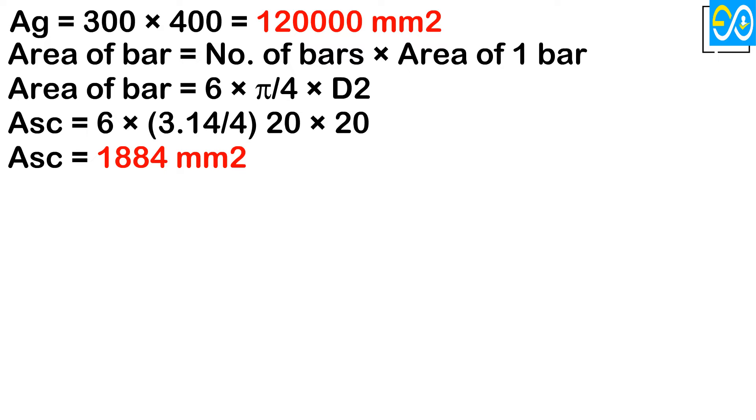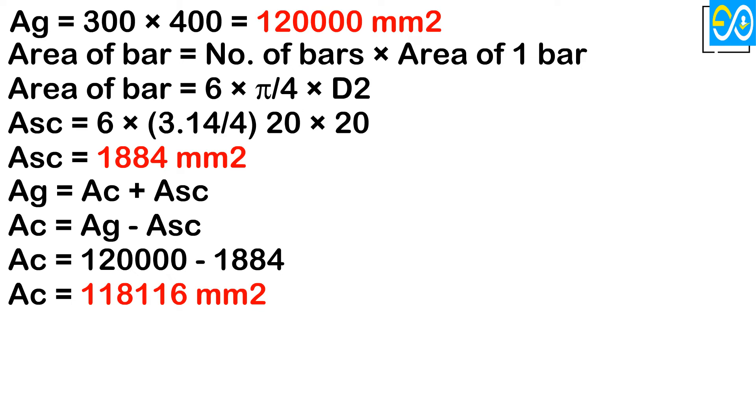Now we calculate the area of concrete in the column. We know that the gross cross-sectional area of the column equals the area of concrete plus the area of steel. Ag equals Ac plus Asc, therefore Ac equals Ag minus Asc. Putting the value of the gross area and subtracting the steel area, we get Ac equals 120,000 minus 1884, Ac equals 118,116 square millimeters.